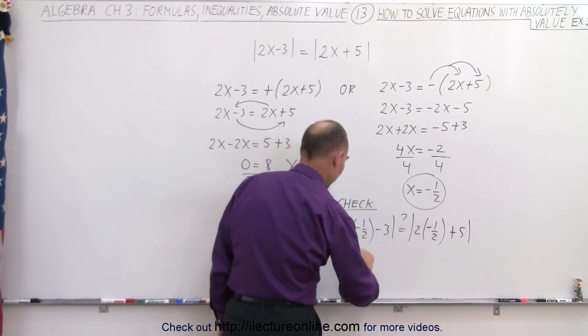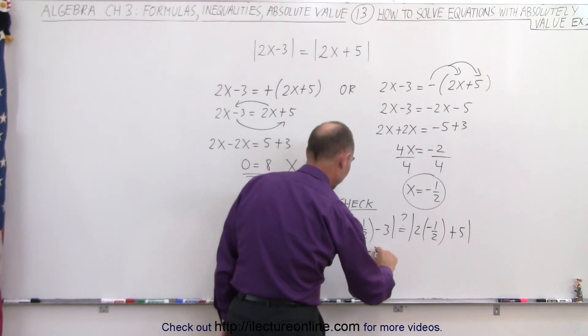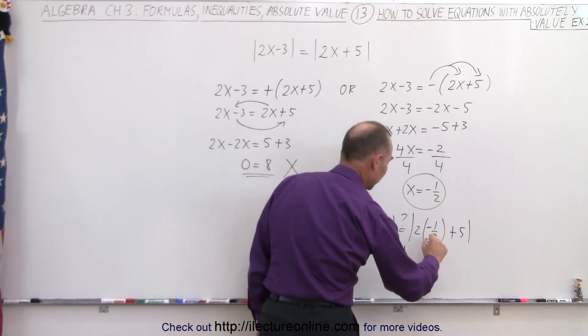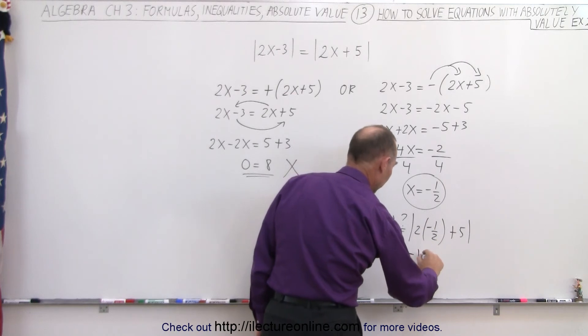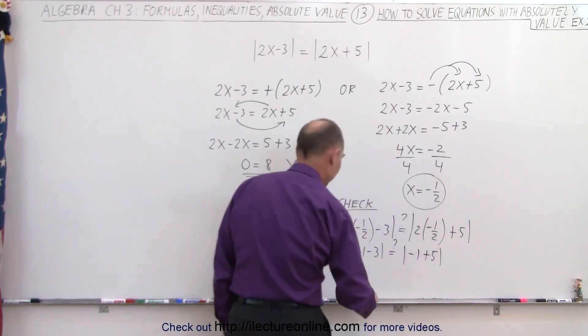So 2 times negative one-half is negative 1, minus 3. Is that equal to negative 1 plus 5? And finally, is the absolute value of negative 4 equal to the absolute value of 4?